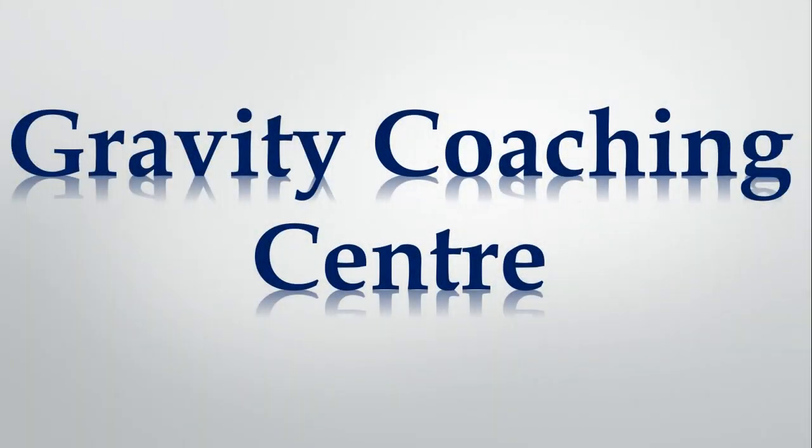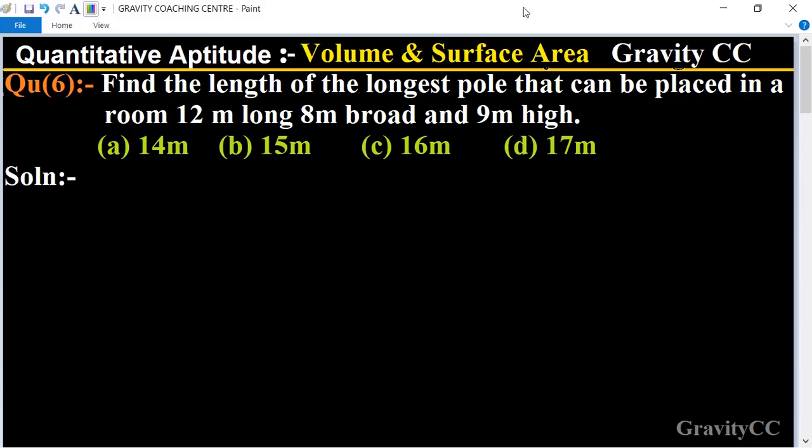Welcome to our channel Gravity Coaching Center. Quantitative Aptitude chapter Volume and Surface Area, question number six: Find the length of the longest pole that can be placed in a room 12 meter long, 8 meter broad, and 9 meter high.